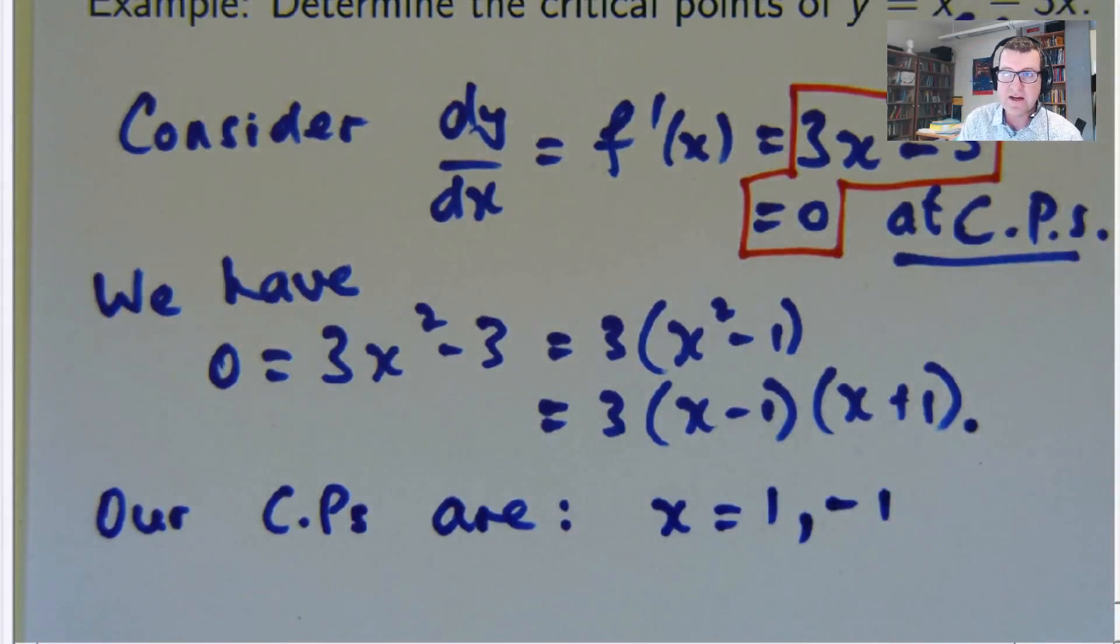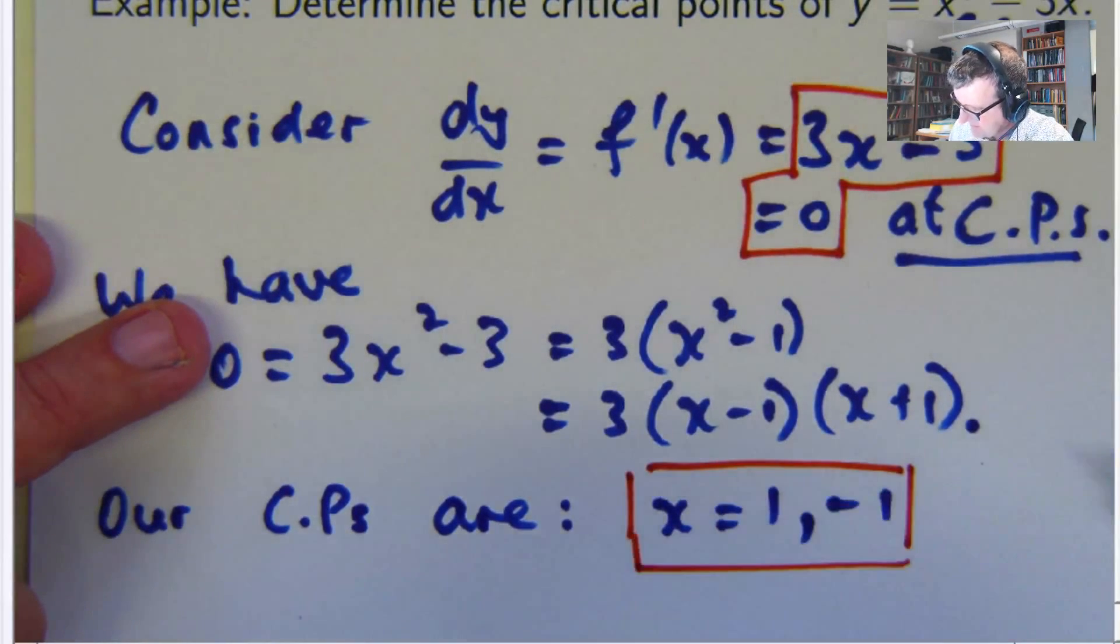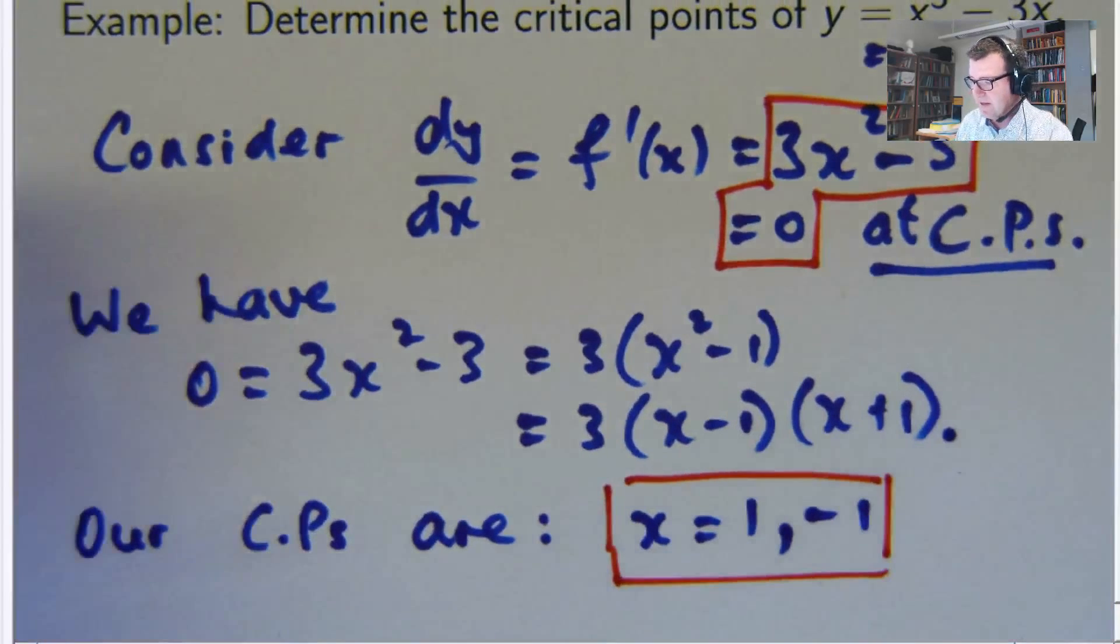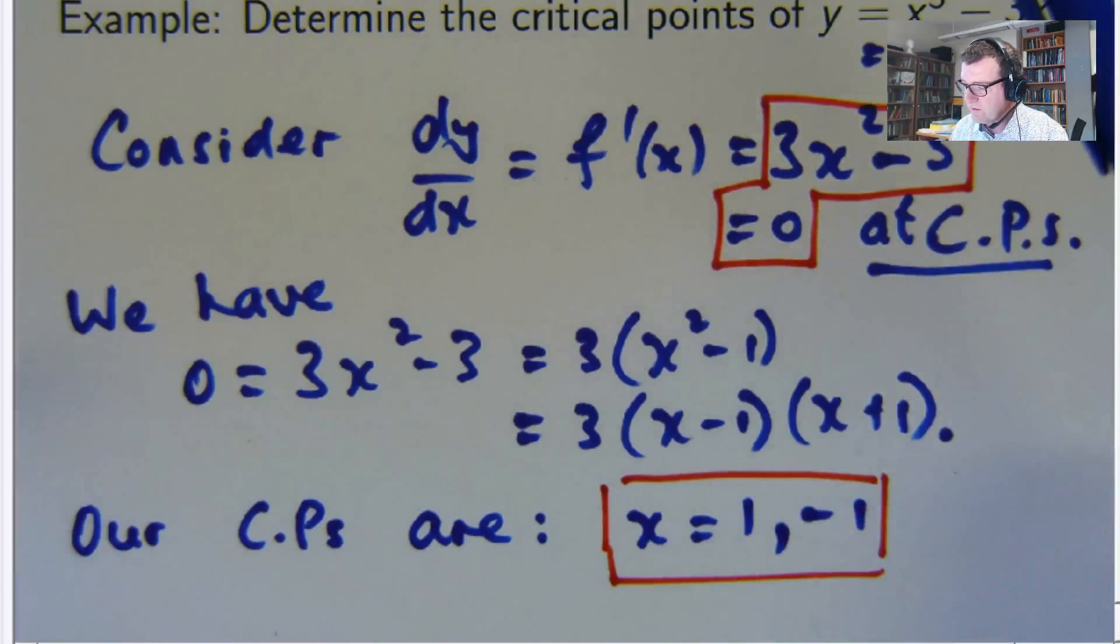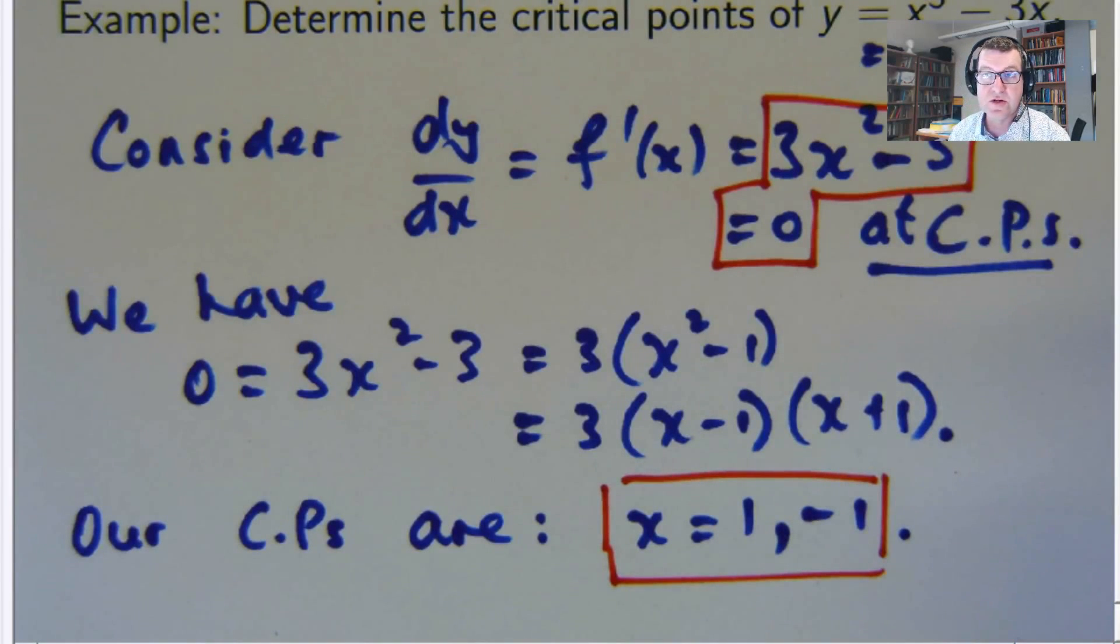So this function has two critical points. So these are like the c values, if you like, from our original definition. So these are on the x-axis. What is the value of the function, for example, at these critical points?